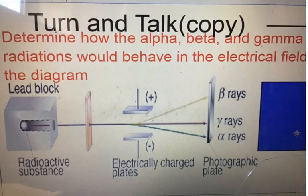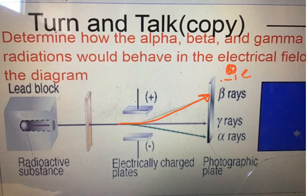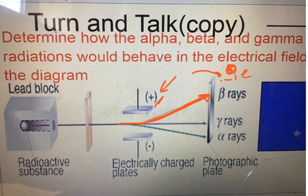If you said that this curving particle is the beta particle or beta ray, you're absolutely correct. The reason is beta particles have a charge of negative one. In chemistry, opposites attract — so beta particles are attracted towards the positive plate.